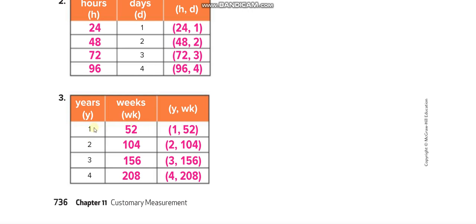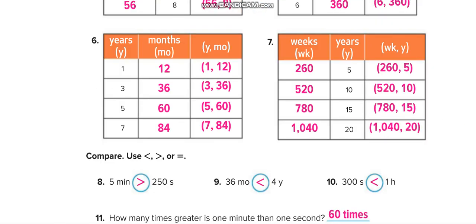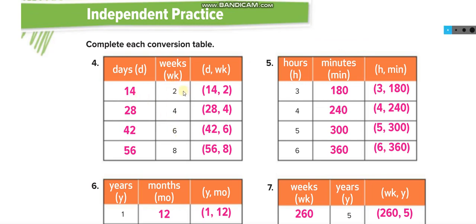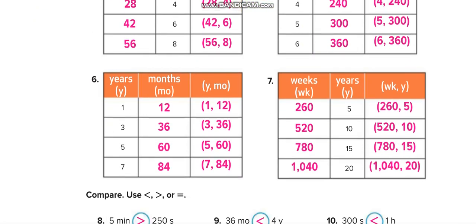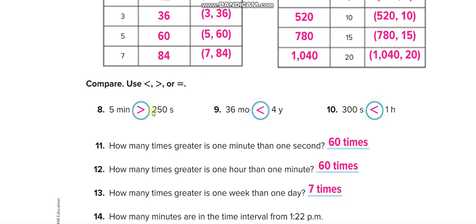For years into weeks: 1 year is 52 weeks, 2 times 52, 3 times 52, 4 times 52. For weeks into days: 1 week is 7 days, 2 times 7 is 14, 4 times 7 is 28, 6 times 7 is 42, 8 times 7 is 56. For hours into minutes: 1 hour is 60 minutes, 3 times 60, 4 times 60, 5 times 60, 6 times 60. For years into months: 1 year is 12 months, so 3 times 12, 5 times 12, 7 times 12. For years into weeks: 5 times 52, 10 times 52, 15 times 52, 20 times 52.